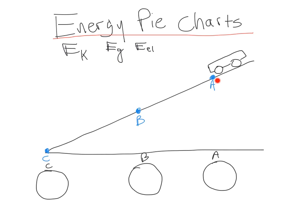Does it have gravitational energy here at point A? In other words, does it have a height above the ground? And obviously the answer to that would be yes. At position A, there is a height above the ground, and that means it does have some gravitational energy. Is there any elastic energy? No, because there's no spring stretch, no deformation of any kind of material. So if height is the only thing we have here, and there's no motion and no elastic energy stored, then our pie is going to have gravitational energy only. That's all we have.